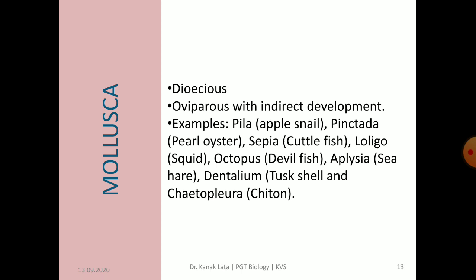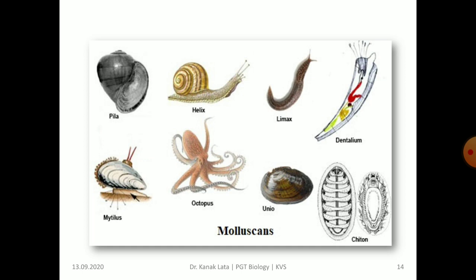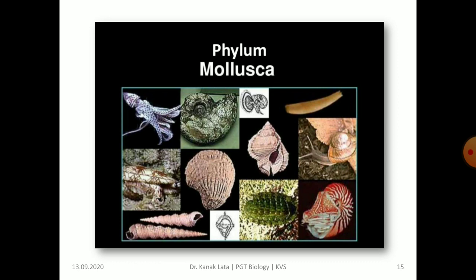They are oviparous with indirect development, meaning an intermediate larval stage is present. Common examples of Mollusca are apple snail, pearl oyster, cuttlefish, squid, devilfish, sea hare, tusk shell, chiton, etc. In the given figures, you may observe the different members of Mollusca.